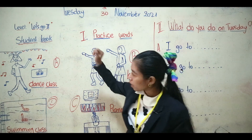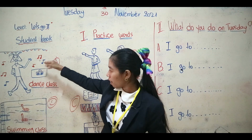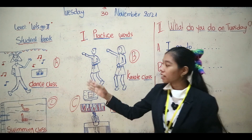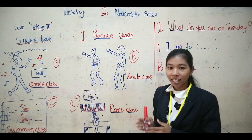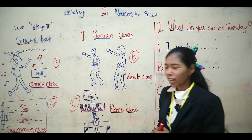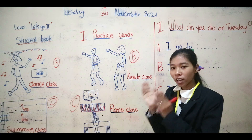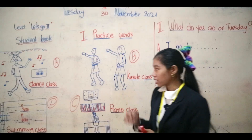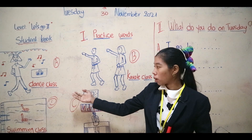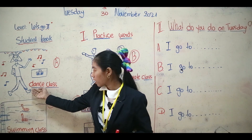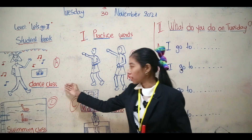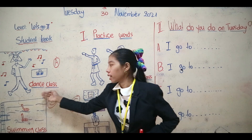Let's look at picture A first. We see one person — a girl — and what is she doing? Dance! So can you guess what class it is? Dance class! Great job. Dance class in Khmer. We can spell it: D-A-N-C-E, dance, and C-L-A-S-S, class. Great job — dance class!